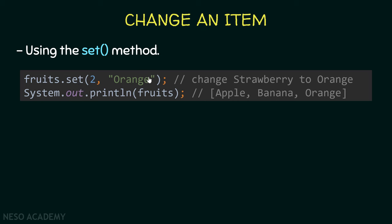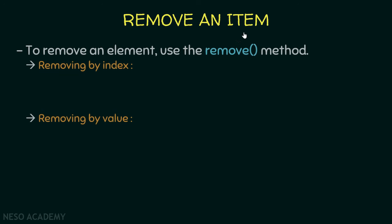Keep in mind that strings are immutable. When set() is executed, the third element in our ArrayList stops referencing 'strawberry' and now references 'orange'. Since no object references 'strawberry' anymore, it is removed from memory by the Java garbage collector.